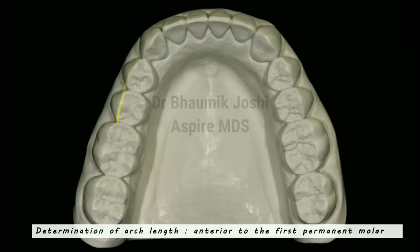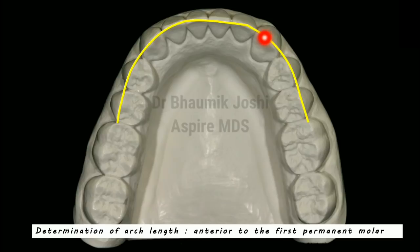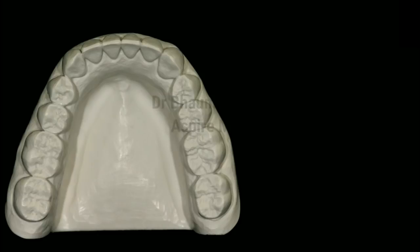The first component is the arch length. The arch length is measured anterior to the first permanent molars by using a soft brass wire, which is placed on the mesial surface of the first permanent molar and then passed against the cusp tips of the premolars, the cusp tip of the canines, and on the incisal surface, then passing in the same manner on the opposite side up to the mesial surface of the first permanent molar. By doing this we will get the arch length, which is called X.